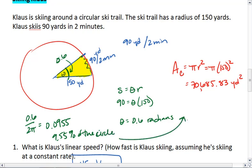I can use this number then. Take my 70,685.83 times 0.0955. And that tells me that the yellow area alone is 6,749.999, so rounding up 6,750 yards squared.